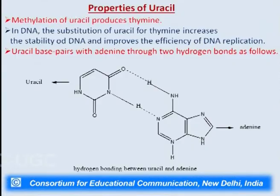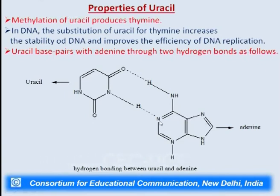Now the properties of uracil: methylation of uracil gives thymine, its methyl derivative. In DNA, the substitution of uracil for thymine increases the stability of DNA and improves the efficiency of DNA replication. Uracil base pairs with adenine through two hydrogen bonds. Here the nitrogen of uracil undergoes hydrogen bonding with the nitrogen of the pyrimidine ring of adenine, and the keto group of uracil undergoes hydrogen bonding with the amino group of adenine. So there are two hydrogen bonds between uracil and adenine, which makes the DNA more stable.